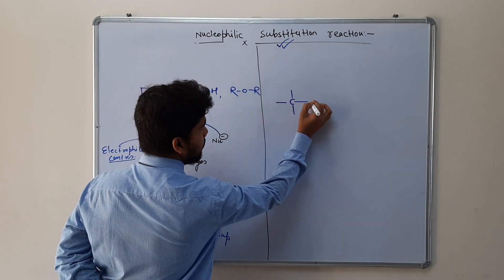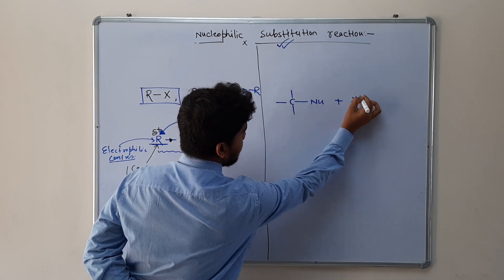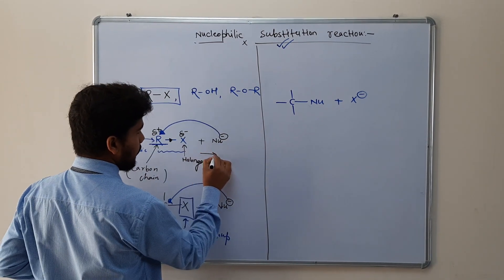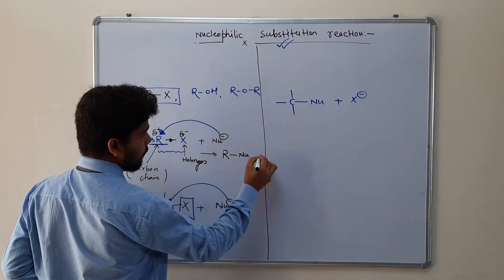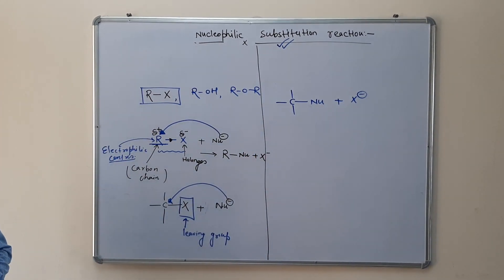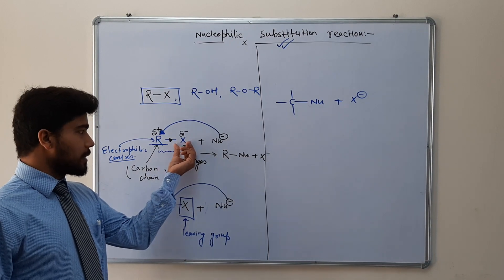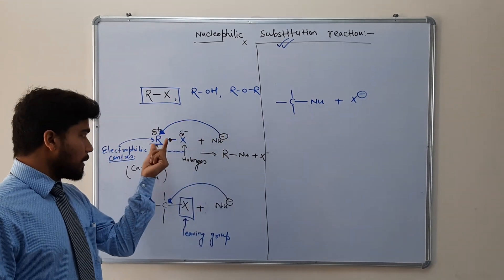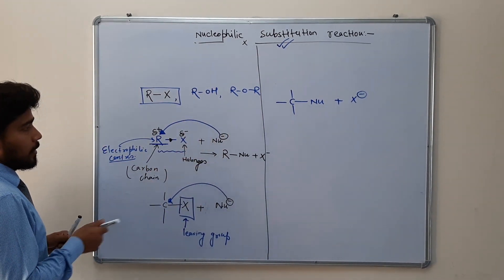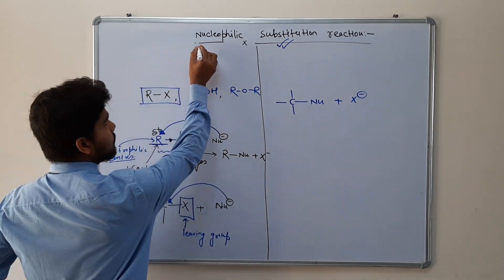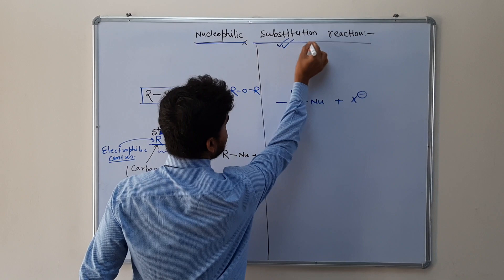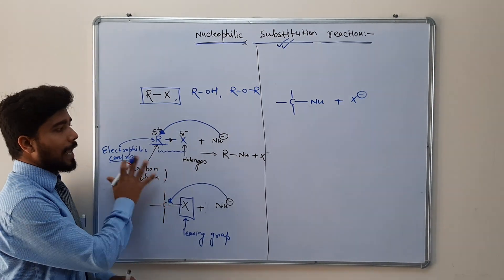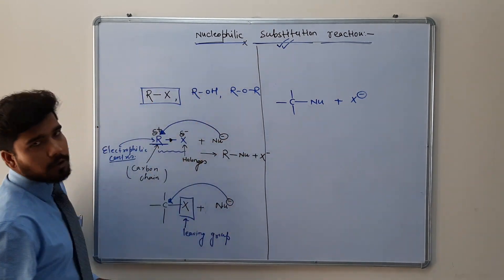This reaction is called a nucleophilic substitution reaction. At the end of the reaction, R is substituted by the nucleophile and X⁻ is released. One element — the halogen — is being substituted by another ion or element — the nucleophile — and that is why we call this reaction a nucleophilic substitution reaction. Although this is a simple way to understand it, this reaction is not as easy as it seems, and we will be discussing a lot more about it.